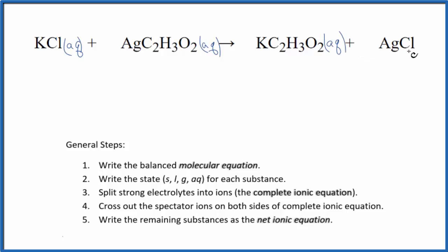That'll be aqueous. Silver chloride, though, this is insoluble. So when you have AgCl, that means it's insoluble. It'll be a precipitate in the reaction. So we just write S. It's a solid. It fell to the bottom of the test tube.